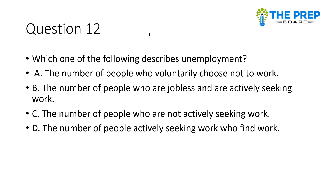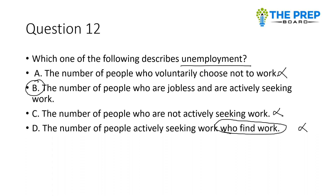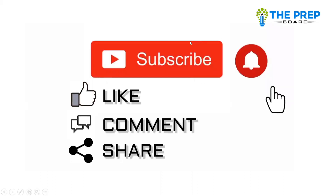Which of the following best defines unemployment? Options are: number of people who voluntarily choose not to work; number of people who are jobless and actively seeking work; number of people not actively seeking work; or number of people who find work. Those who choose not to work or are not seeking work don't fall in the unemployment category. The correct option is B — persons who are jobless and actively seeking work. Please like, share, and subscribe to our channel.